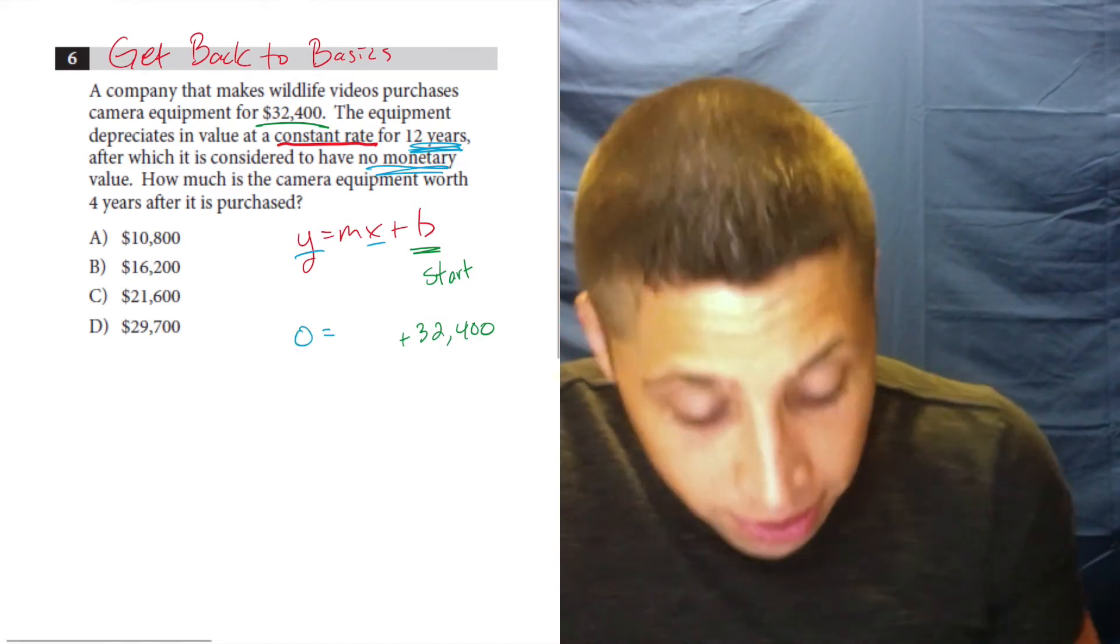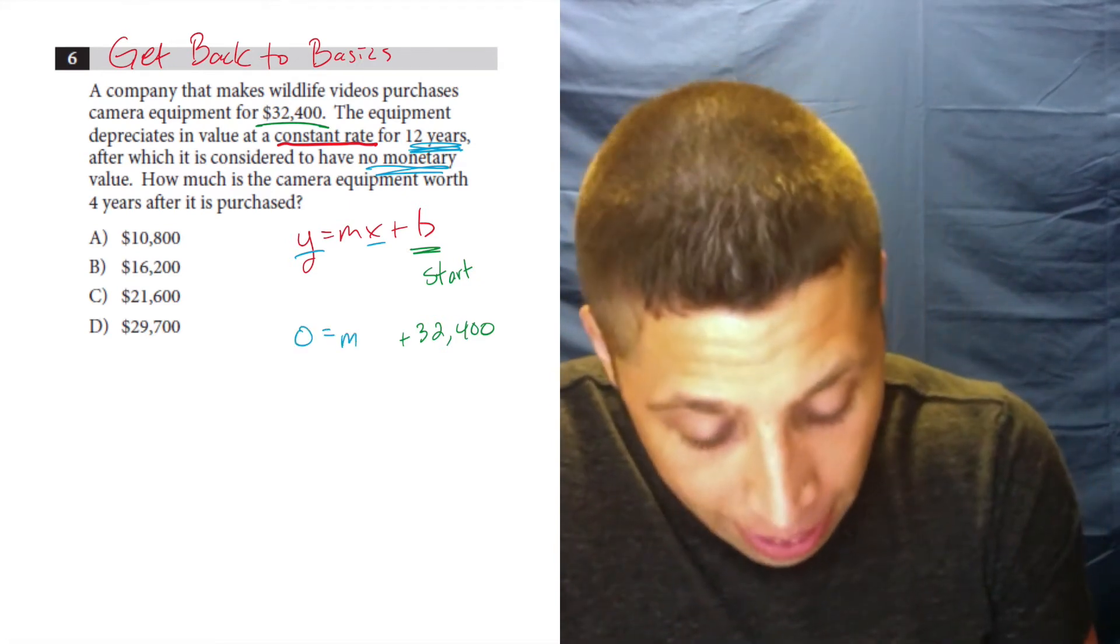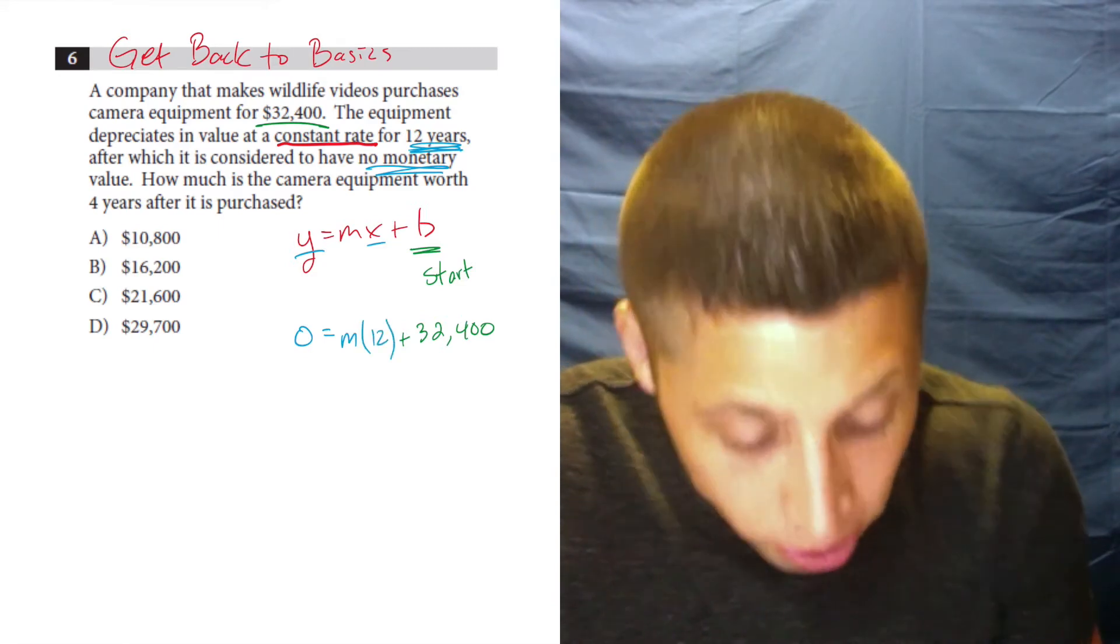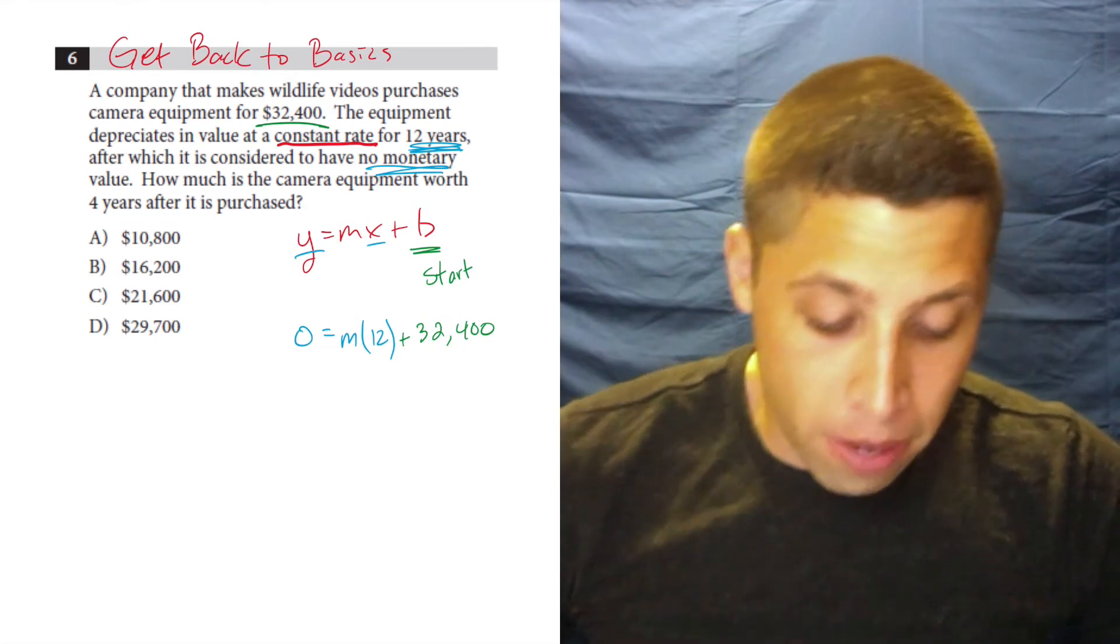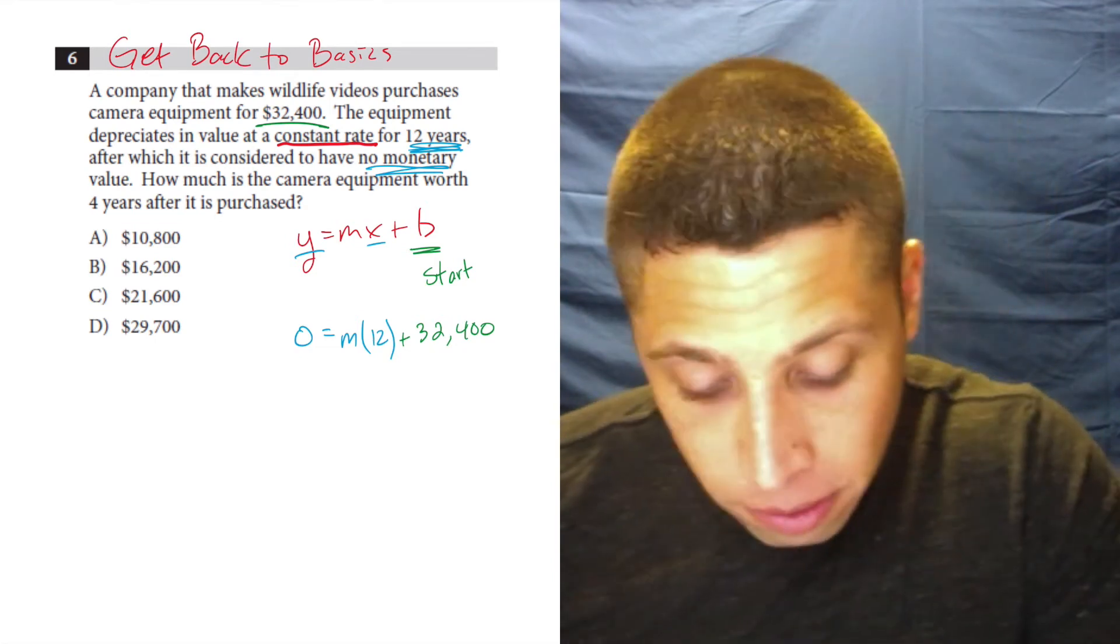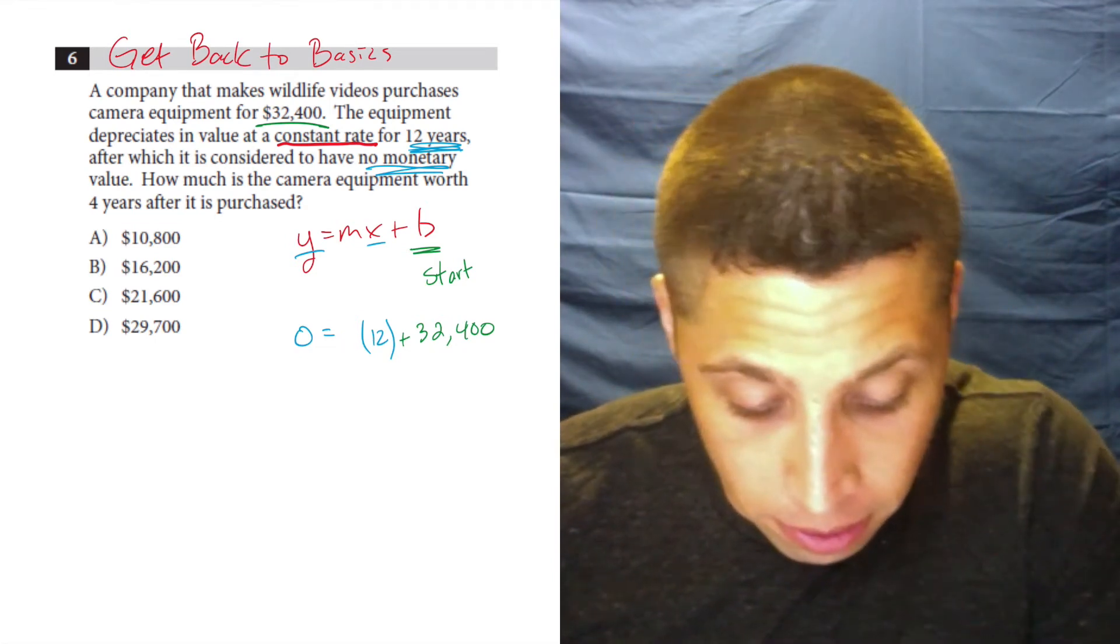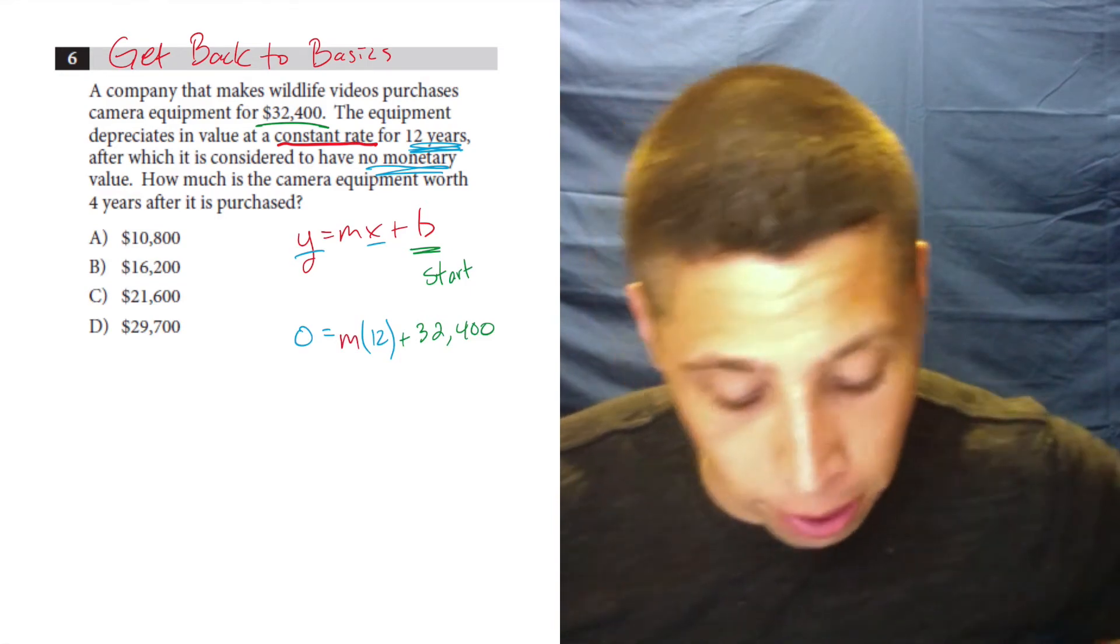So that means y is zero, m is uncertain, and 12 is our value of x. So actually, let's put that in red just to be clear that this is our constant rate. This is the thing we want to know for now.